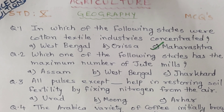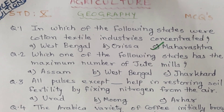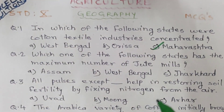Question 2. Which one of the following states has the maximum number of jute mills? A. Assam. B. West Bengal. C. Jharkhand. The correct answer is B. West Bengal.